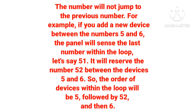But with safe addressing, the panel will give its unique address. If you add any device between five and six, the panel will give it the last address. For example, if we have 51 as the last device, the panel will give it address 52. So the location will remain 1, 2, 3, 4, 5 — then 52 — then 6. That is the benefit of safe addressing.